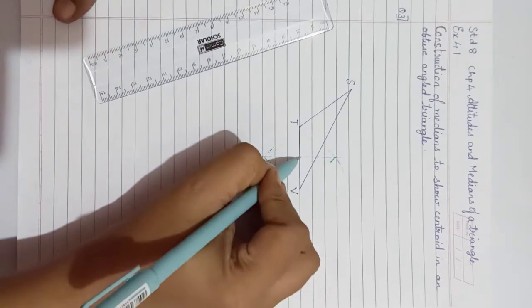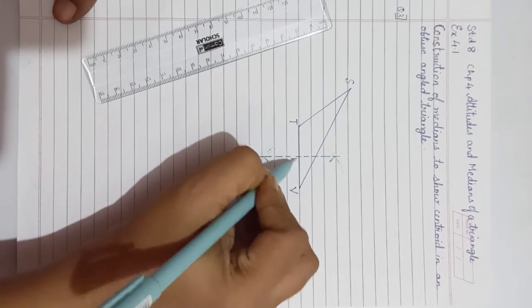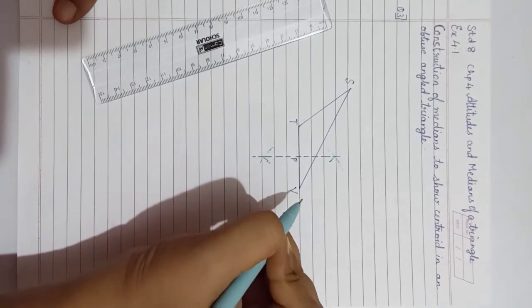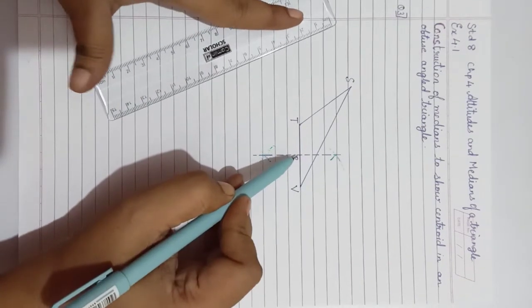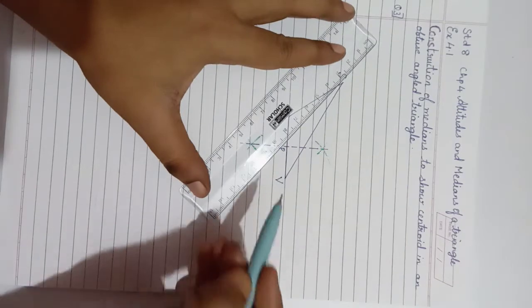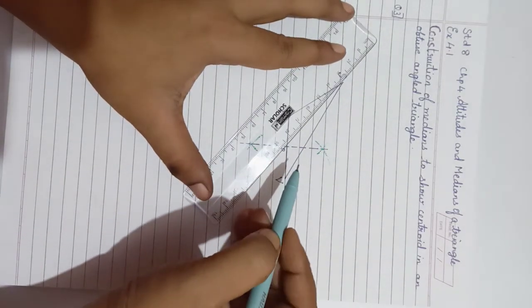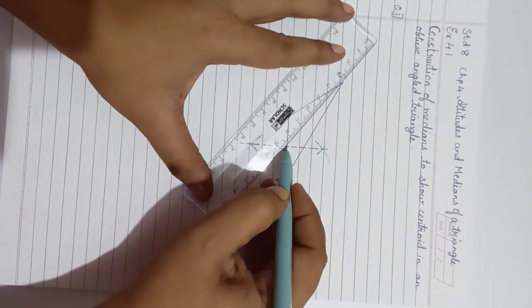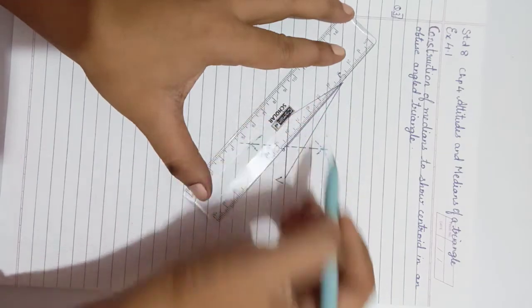The point obtained here is the midpoint, let us label it as point P. Point P midpoint to be joined with the opposite vertex S to obtain the median. So here we obtain the first median.